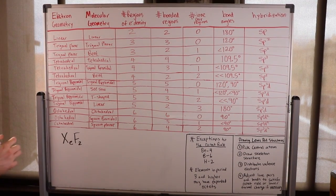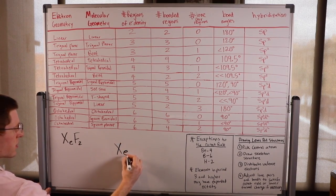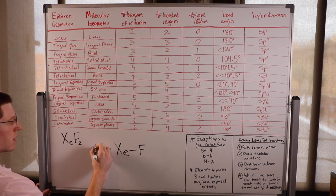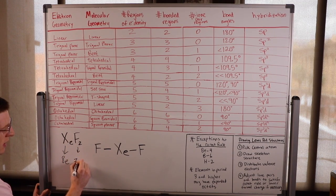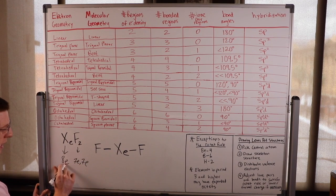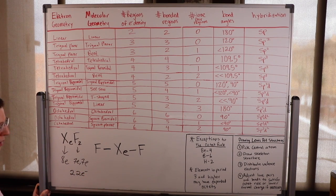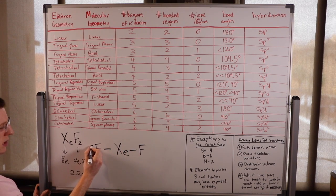The next molecule is xenon difluoride, XeF2. The central atom is xenon because there's only one. I'll attach my outer fluorine atoms. Xenon contributes eight electrons and fluorine contributes seven each, so eight plus fourteen gives 22 electrons total. We've already used four for these two bonds.